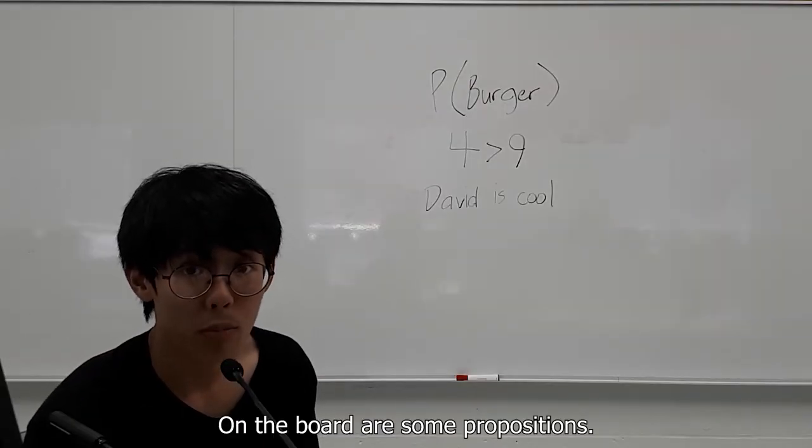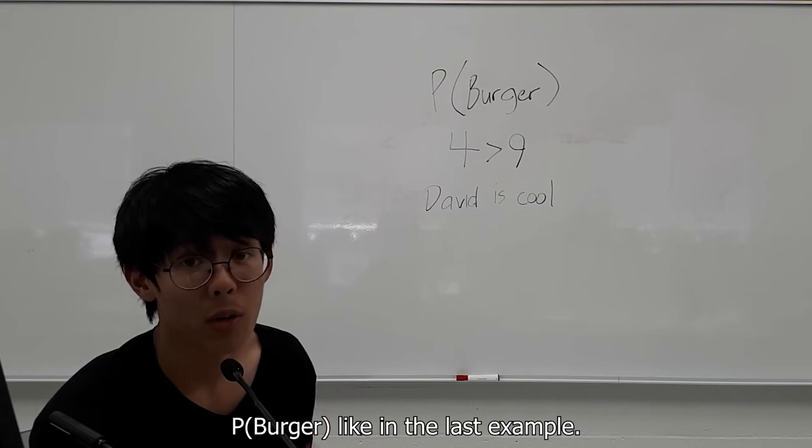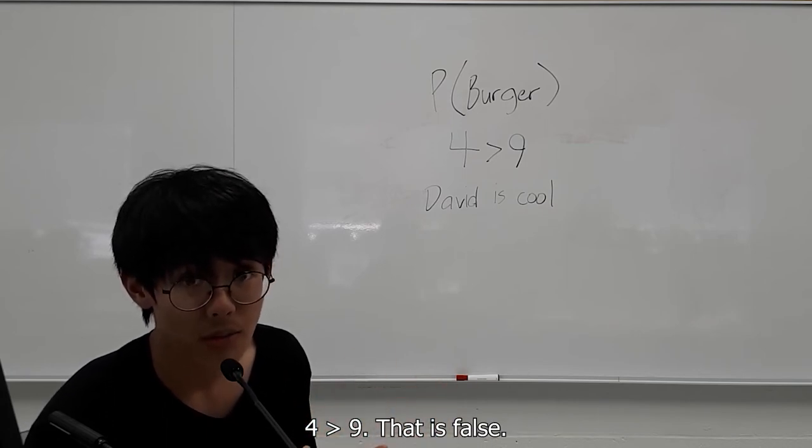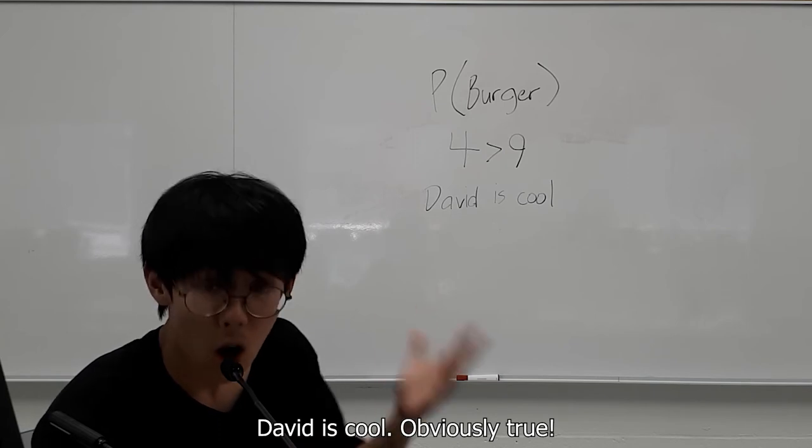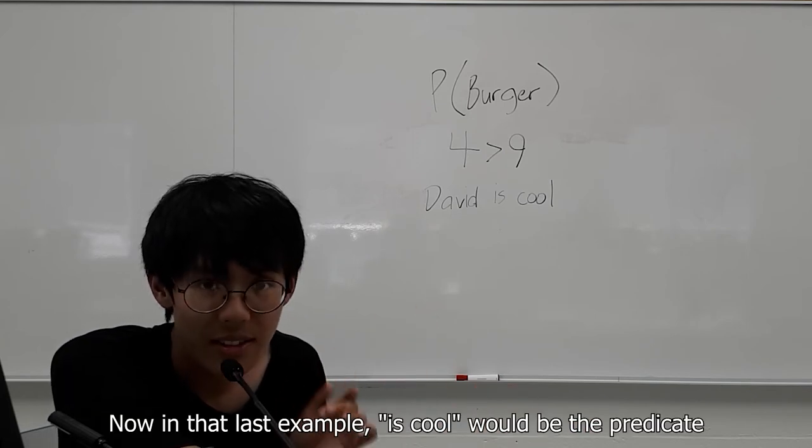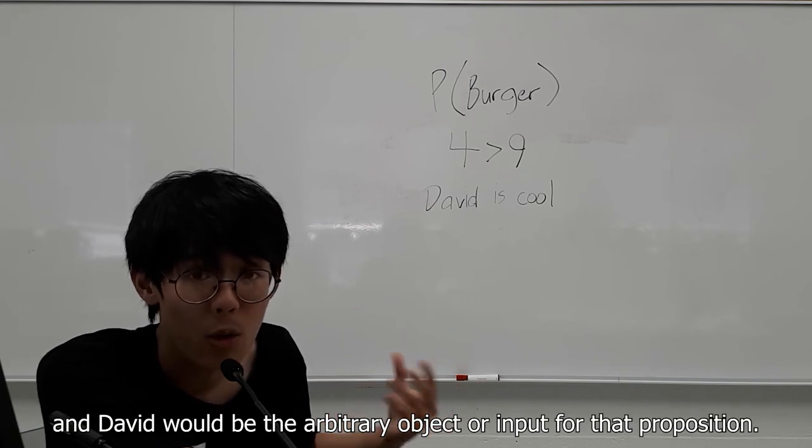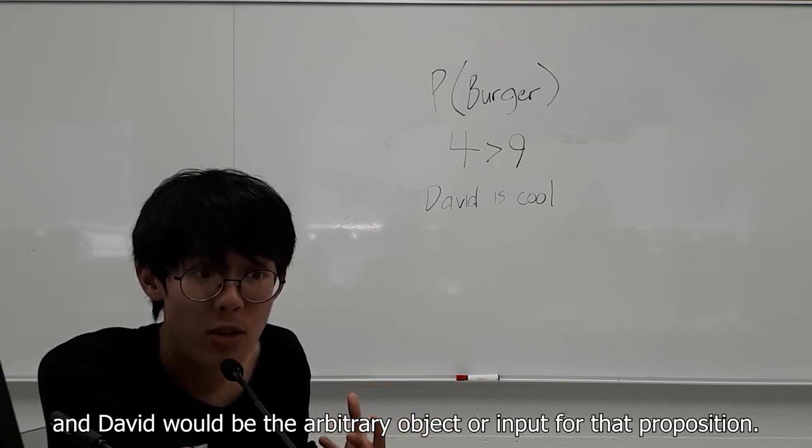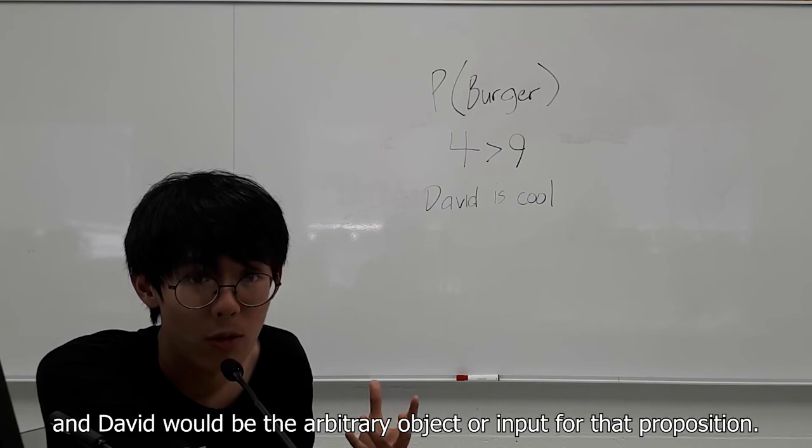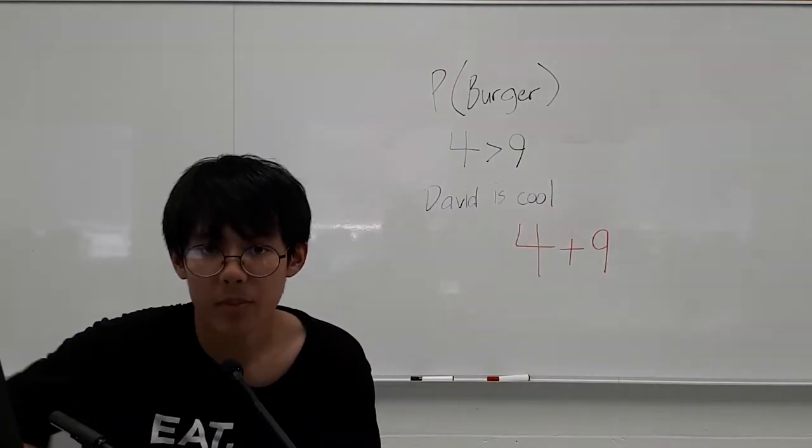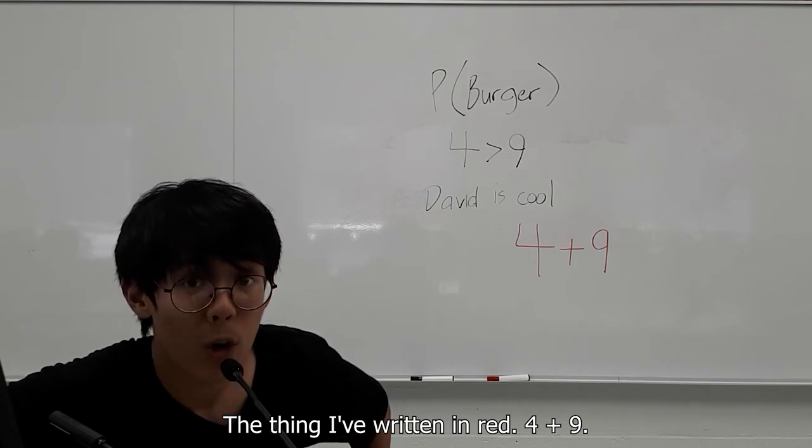On the board are some propositions. P of burger, like in the last example. Four greater than nine. That is false. David is cool. Obviously true. Now in that last example, is cool would be the predicate. And David would be the arbitrary object or input for the proposition. Now, the thing I've written in red, four plus nine, that is not a proposition.